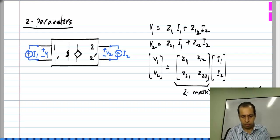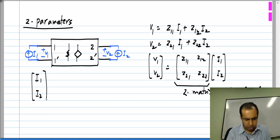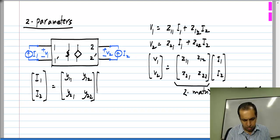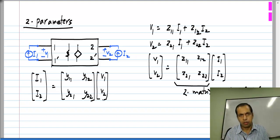Now, if you compare this to Y parameters, what did we have? In case of Y parameters, we had I1, I2 equal to Y11, Y12, Y21, Y22 times V1 and V2.